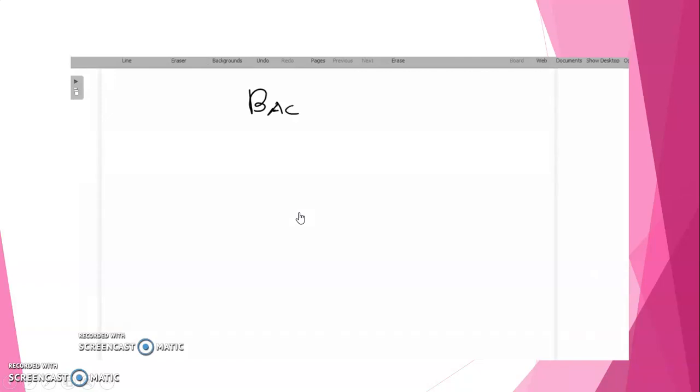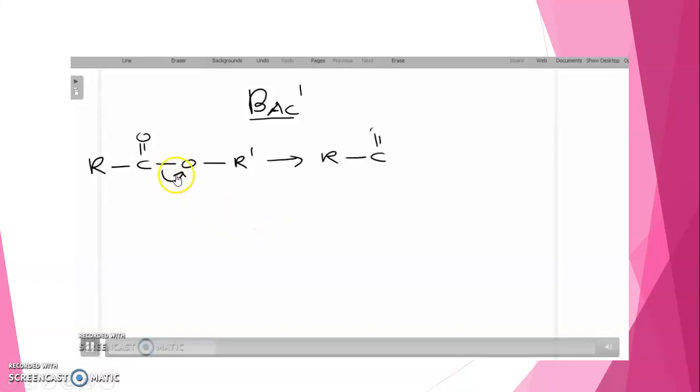Next, BAC1 type mechanism: Base catalyzed, acyl cleavage, first order. The first step of the mechanism, which is also the slower step, the molecule splits like this to form an acylium carbocation and an alkoxide ion.